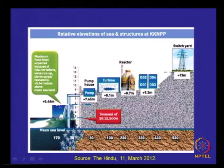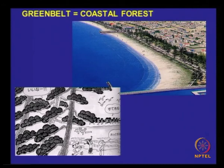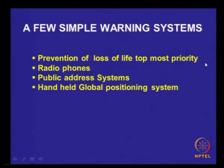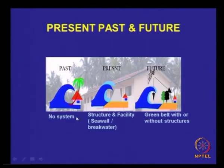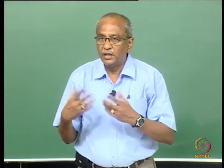Reduction of tsunami flow velocity can be achieved by having structures like these or by a green belt. This is a view of having a green belt — the density is not much, they are probably still planning it. Prevention of loss of life is the top-most priority. Radio phones, public address systems, and handled GPS can all be used. In the past, structures were the only measures — sea walls and breakwaters. Now the future should be green walls and green belts, with or without structures, which is the reason for the research studies on green belts.